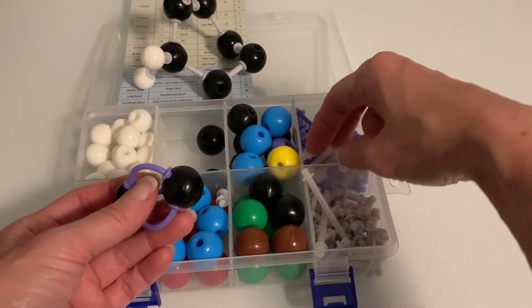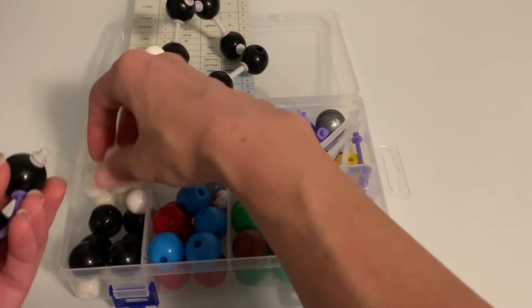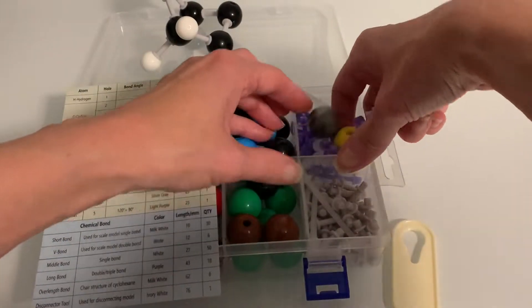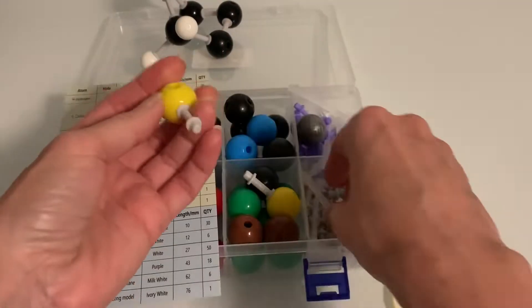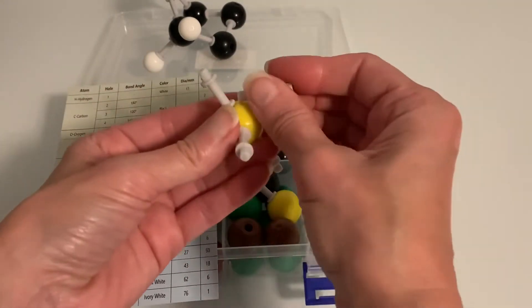The Linktour set also comes with little short stubby bonds that you could use if you wanted to make a space filling model. The Linktour set comes with atoms that have six holes in them. These would be used to make models of molecules with octahedral geometry.